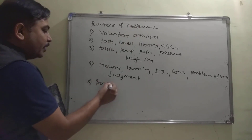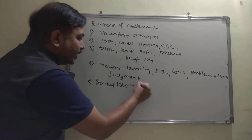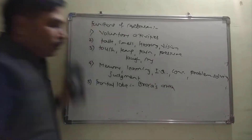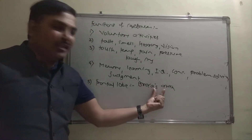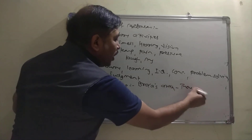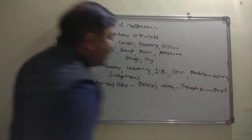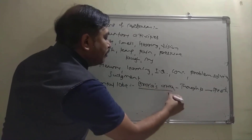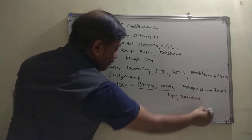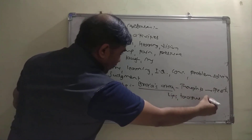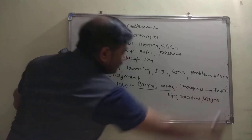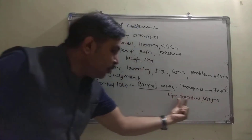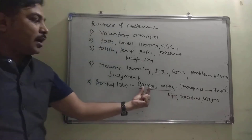Within the frontal lobe, there is a special small area called Broca's area, named after the scientist who first discovered it. Its function is to convert your thoughts into speech. It controls the movement of your lips, tongue, and vocal cords (larynx) to produce sound.